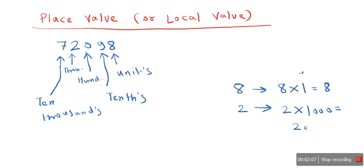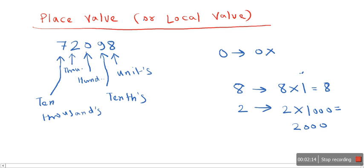If we want to find out the place value of 0, place value of 0 will be 0 multiplied by 100, as it is placed in the 100th position. So it will be 0.